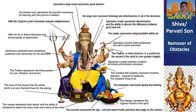Shiva's son with Parvati is actually Ganesha, the remover of obstacles. Oftentimes you'll see Ganesha holding some of the same weapons as Shiva himself — like the trident and that conch shell — showing that this is his dad.